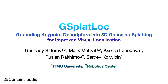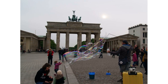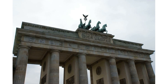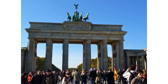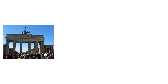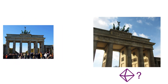We present G-Splat Lock, a method designed to tackle the visual localization task using 3D Gaussian splatting. Given a set of posed images from a static, dynamic, indoor or outdoor environment, our objective is to localize a novel query image.